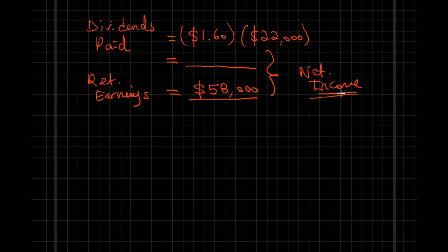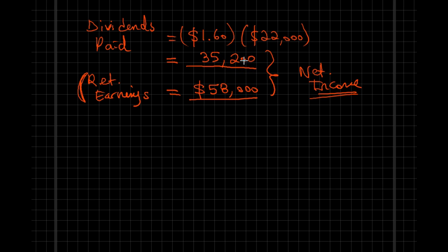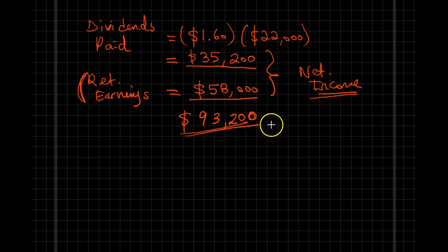Once a company has net income available for shareholders, some of it is paid out as dividends and the rest is retained to grow the company and stay competitive. So $1.60 times 22,000 gives us dividends paid of $35,200. Adding that to retained earnings of $58,000 gives us net income of $93,200.